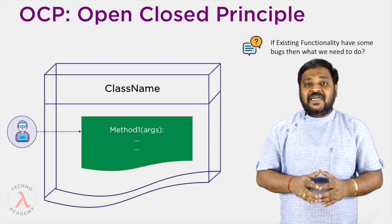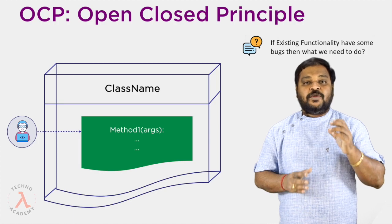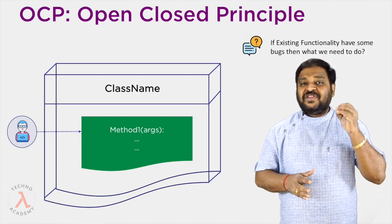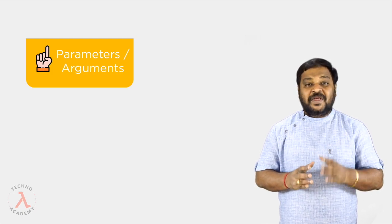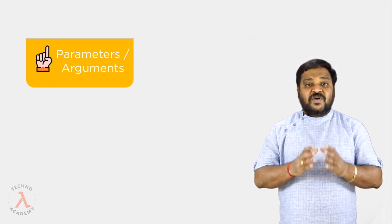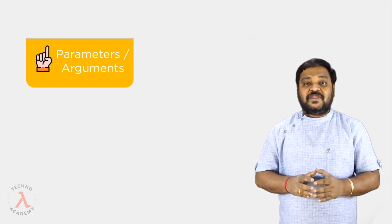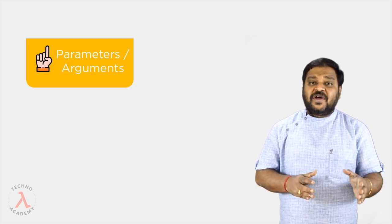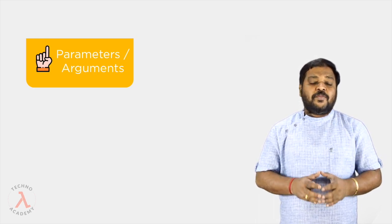Now let us understand the typical approaches to follow when writing code using OCP. We have three types of approaches to achieve the open-closed principle. The first one is using parameters — by passing different arguments to a function or method and changing its behavior based on the parameter value. This is one of the simplest approaches and most freshers usually follow this method, but the problem is if any new requirement comes or there is a change in business logic, this won't be a proper solution.